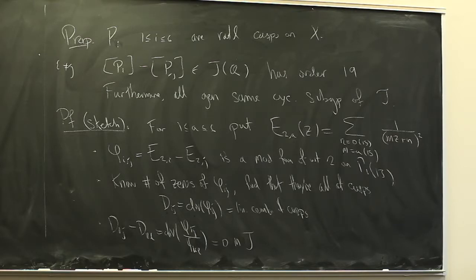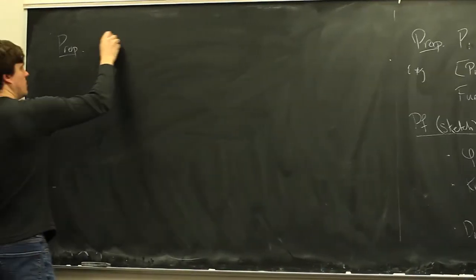This gives us a big cyclic subgroup of the Jacobian, namely Z/19Z inside it. The next proposition is that this is the full torsion subgroup.